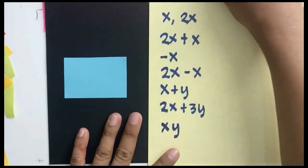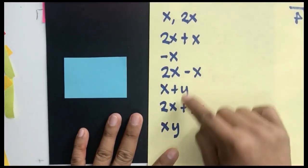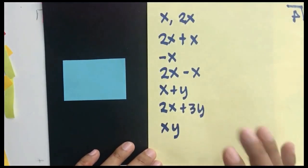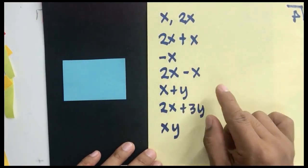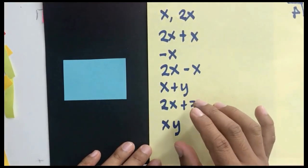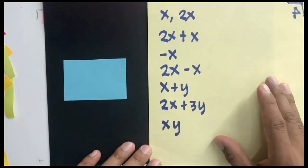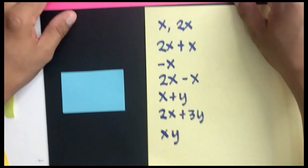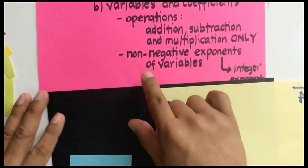You can perform addition, subtraction, and multiplication, but you cannot perform division. When you divide a variable by another variable, the result is no longer a polynomial. We want operations between polynomials to result in another polynomial — we call that the closure property. In the definition, there is also the restriction that the variable must have a non-negative integer exponent.